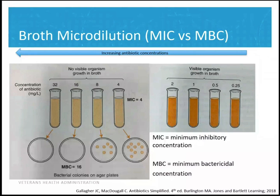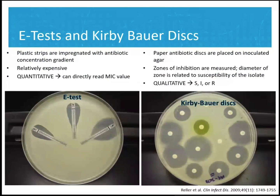The other two methods are E-tests and Kirby-Bauer discs. With E-tests, you can actually get a number reported out because the MIC levels are on the strip. Whereas with Kirby-Bauer discs on the right, you're only measuring the zone of inhibition and getting a range of susceptible, intermediate, or resistant — you don't get the actual number, which we sometimes need in select cases.